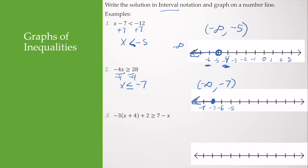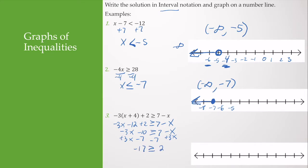For this next example, I distribute to get negative 3x minus 12 plus 2 is greater than or equal to 7 minus x. That gives me negative 3x minus 10 is greater than or equal to 7 minus x. I add 3x to both sides and subtract 7, getting negative 17 is greater than or equal to 2x. Dividing both sides by 2 gives negative 17 halves is greater than or equal to x.